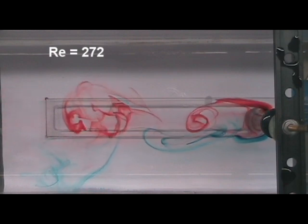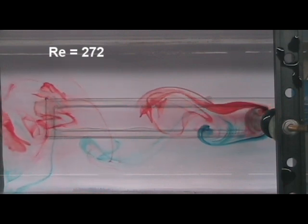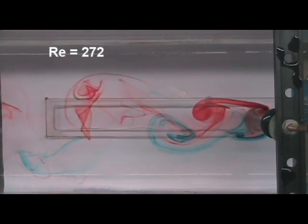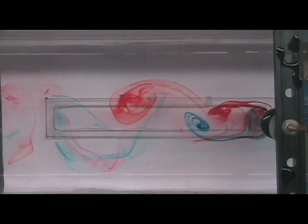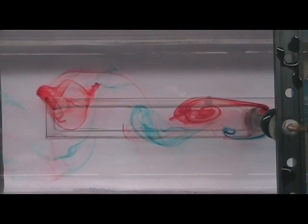In this visualization, we see alternating red and blue vortices shed downstream from a cylinder in cross-flow.